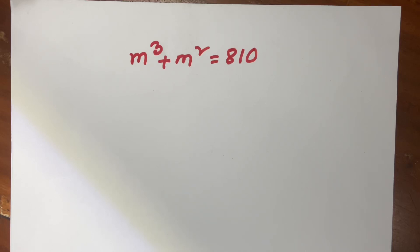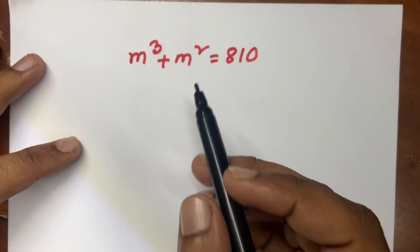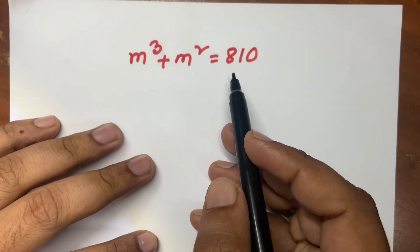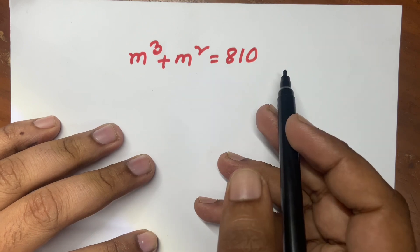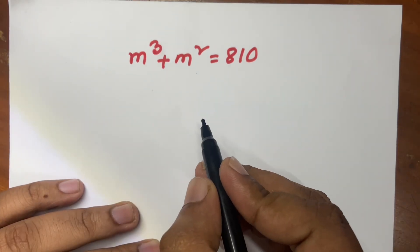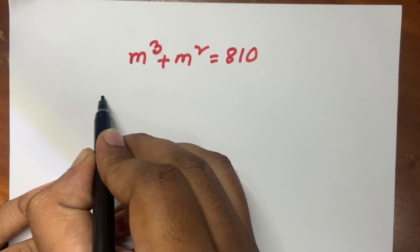Hello everyone, welcome to Russell Classroom. Today I solve this problem — it is a math olympiad question. The question is: m cubed plus m squared equals 810. What is the value of m? Now I will solve this problem.